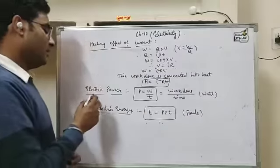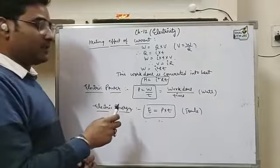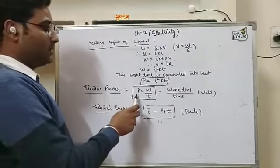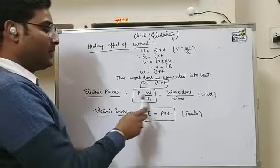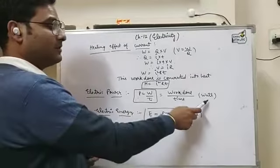Next is electric power. Electric power is the rate of work done. The formula for electric power is P equals W upon T, and the unit of power is Watts.